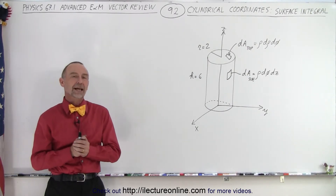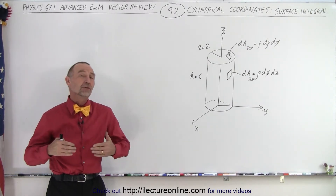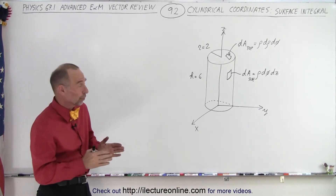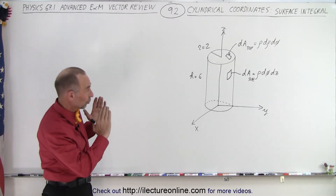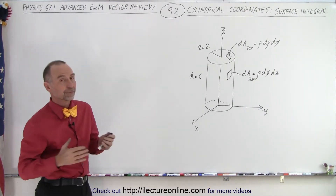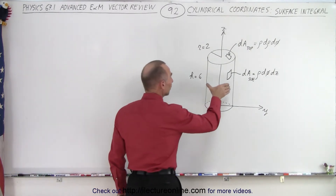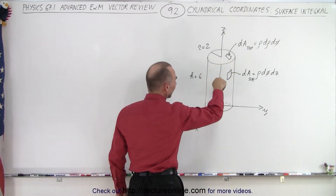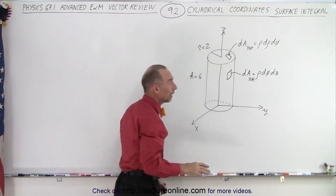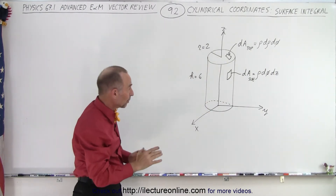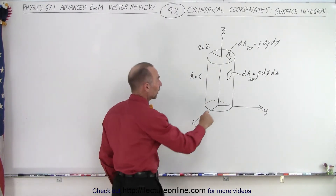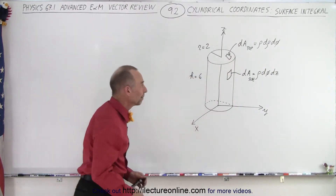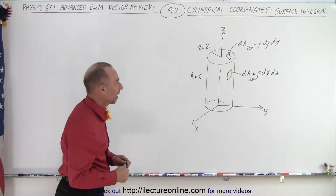Welcome to our lecture online. Now let's try to do some surface integrals in cylindrical coordinates. We're going to find the surface of the cylinder. We have to do it separately — we do the side first and then the top and the bottom. The reason we have to do it separately is because our area element for the side is different than the area element for the top. So let's do the side first.